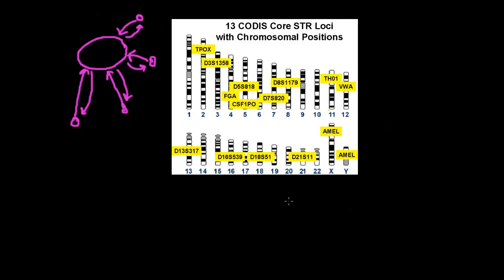These are called core CODIS loci, but the last two are the X and Y chromosomes, and they use them just for sex determination. These two chromosomes are very different in size. Still, they are homologous—there are certain fragments on both chromosomes that are homologous, and that allows them to pair during meiosis.